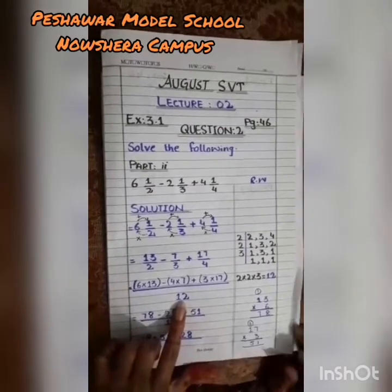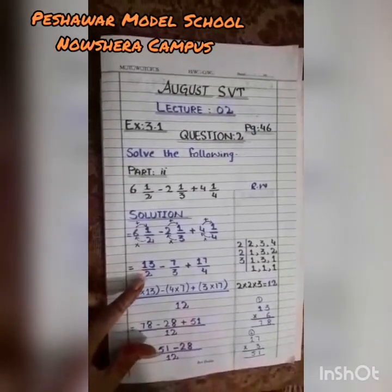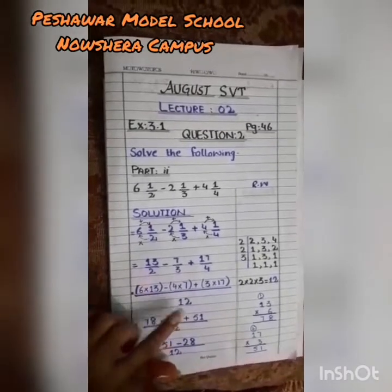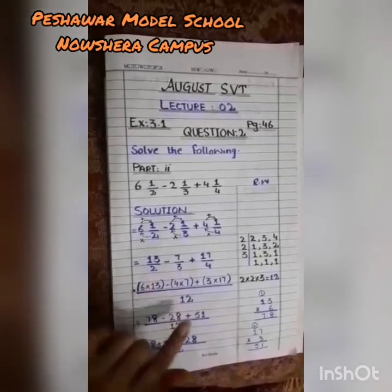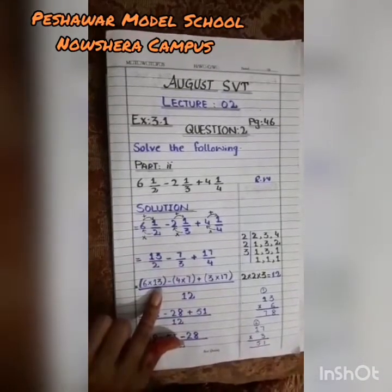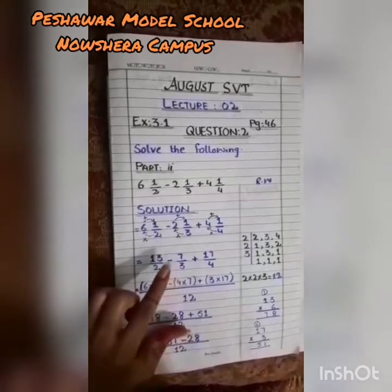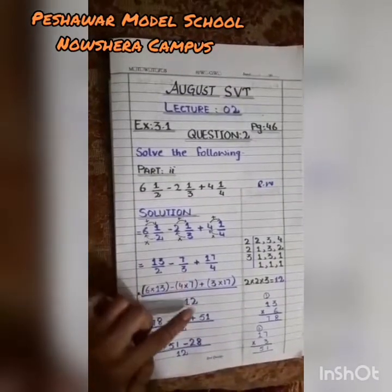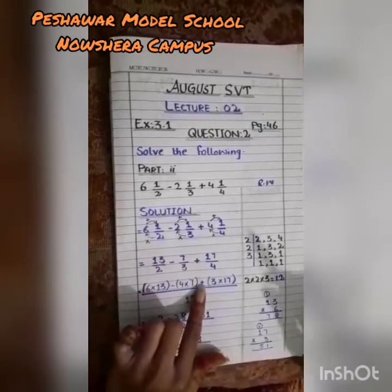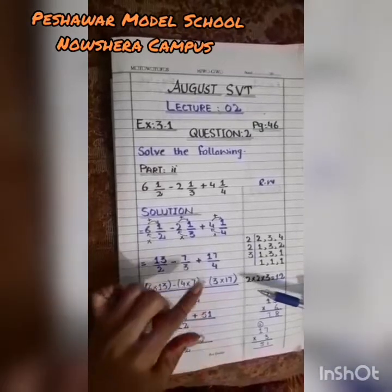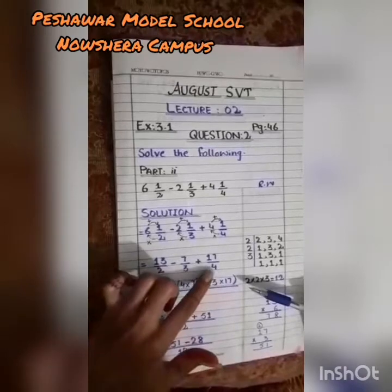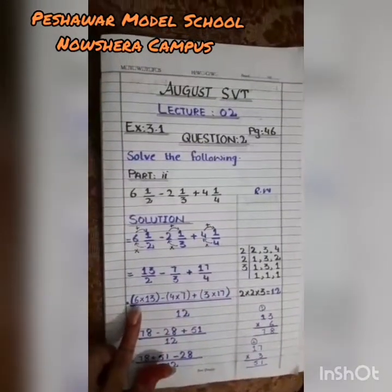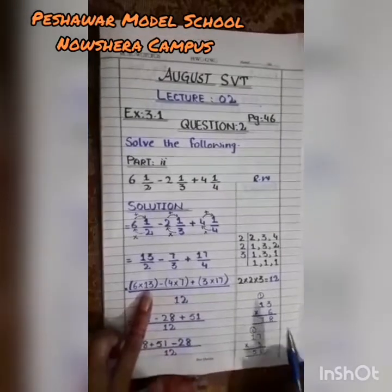First fraction is 13/2. Check: 2 into what gives 12? Two sixes are twelve, so multiply numerator 13 by 6. Minus: next fraction is 7/3 — three into what is twelve? Three fours are twelve, so multiply 7 by 4. Plus: third fraction is 17/4 — four into what is twelve? Four threes are twelve, so multiply 17 by 3.